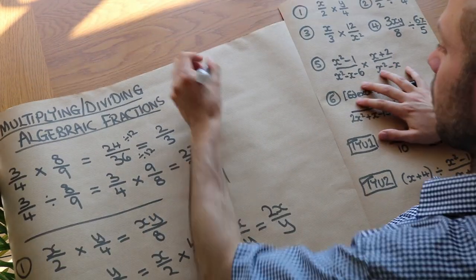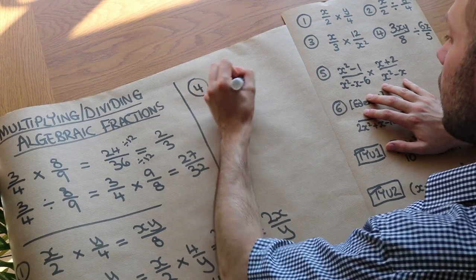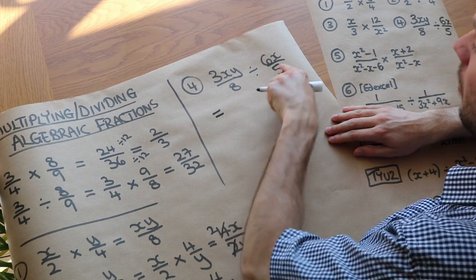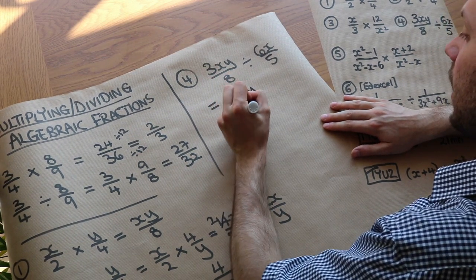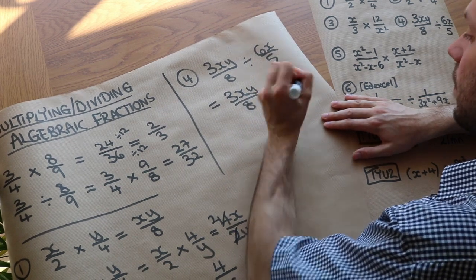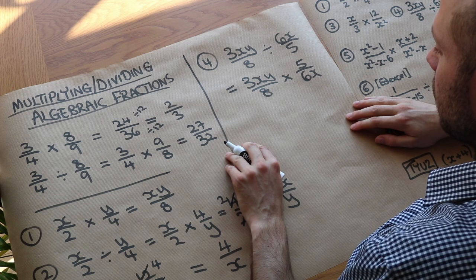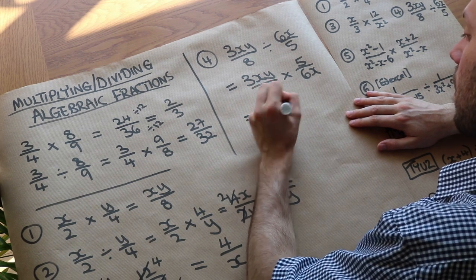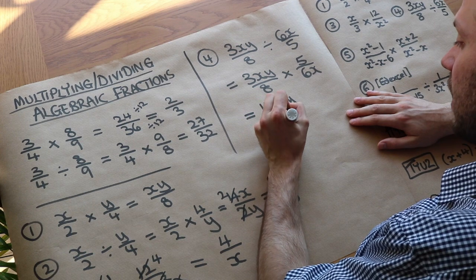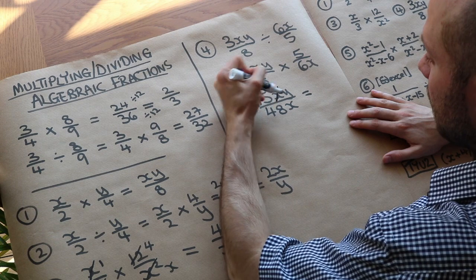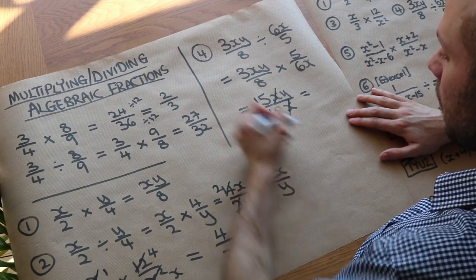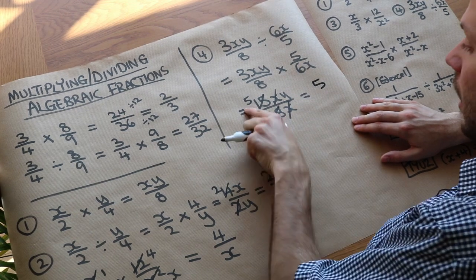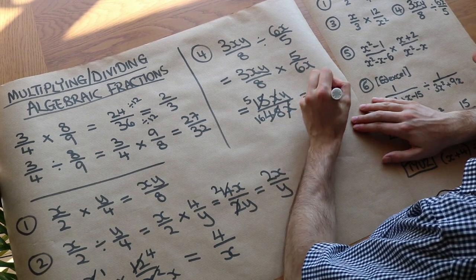For 3xy over 8 divided by 6x over 5, because it's division we instead multiply by the reciprocated fraction: 3xy over 8 multiplied by 5 over 6x. Combining: 3xy times 5 is 15xy, and 8 times 6x is 48x. Dividing top and bottom by x removes the x's, and 15 and 48 both divide by 3, giving 5 and 16. So we're left with 5y over 16.